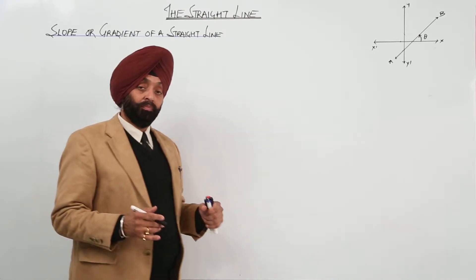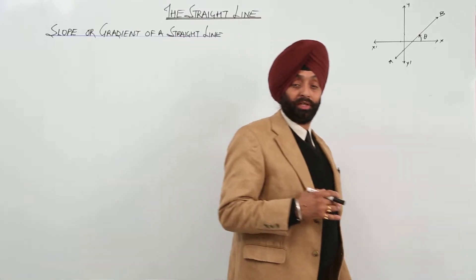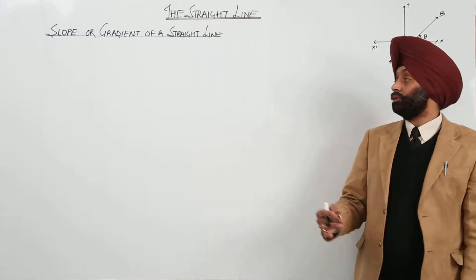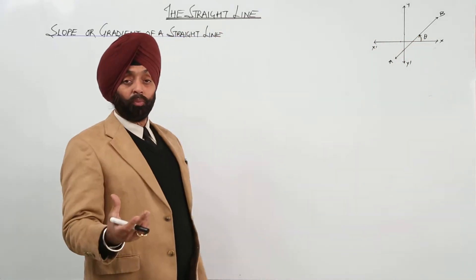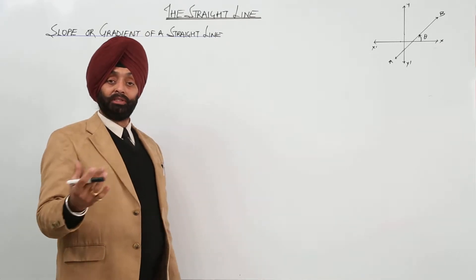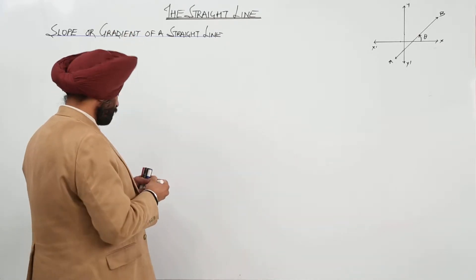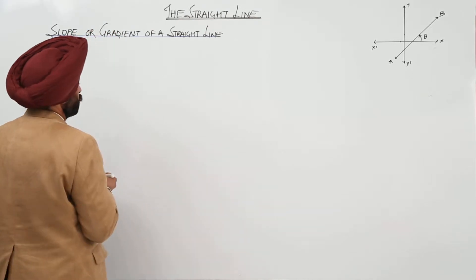Now, starting the main content of the chapter for the straight line, the very first thing is slope or gradient of a straight line. Slope of a straight line basically means angle of a line. So, let's first move to the definition.